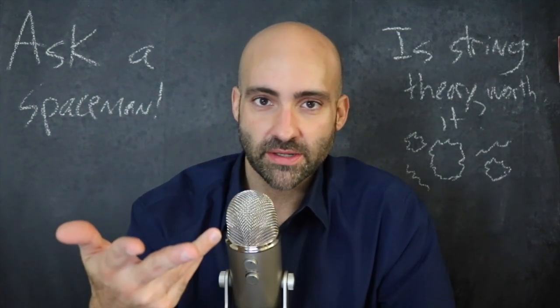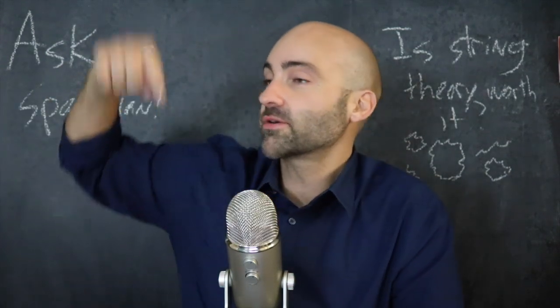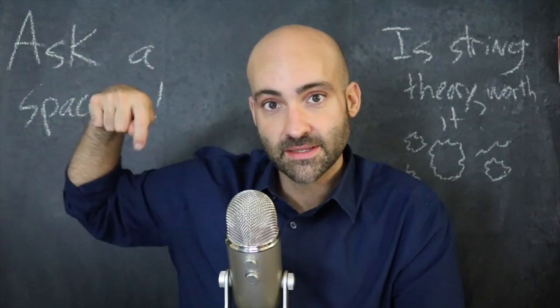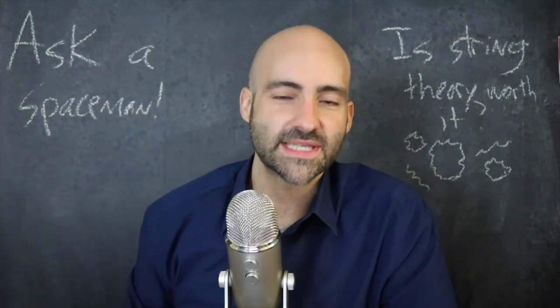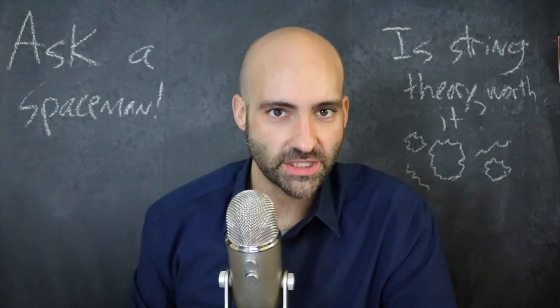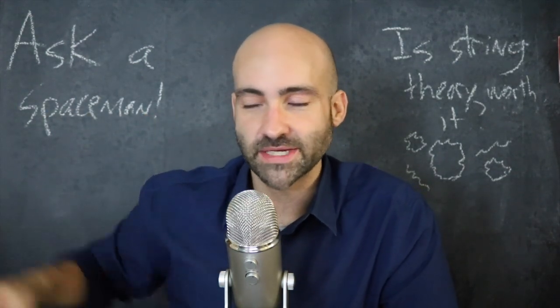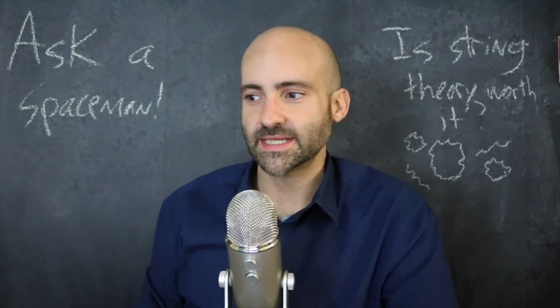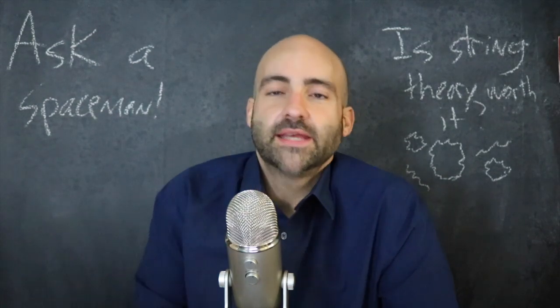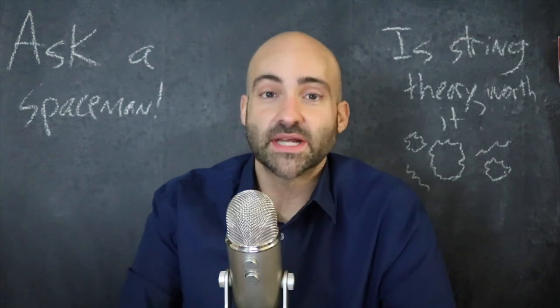In order for string theory to work, there needs to be extra dimensions to our universe. There's our three macroscopic dimensions, our one dimension of time, and then either six or seven additional dimensions. And don't worry, like I said, we're going to get to that later. If we just take six dimensions, if we just stick to that, there's basically an infinity number of ways—not probably not strictly infinite, but there's a lot.